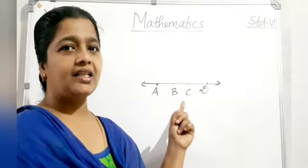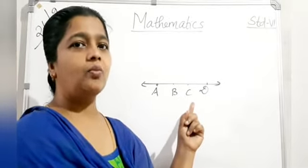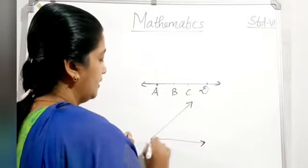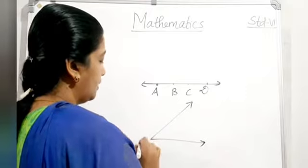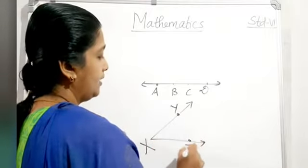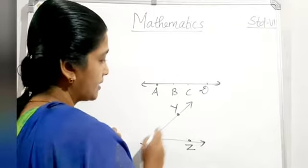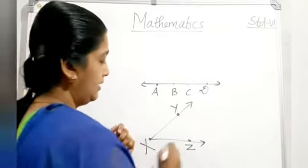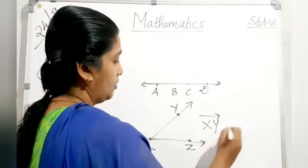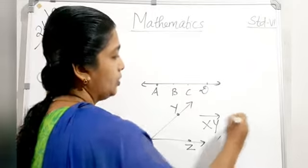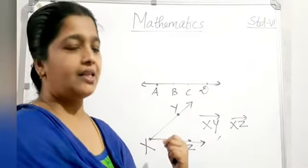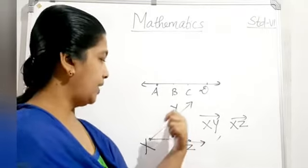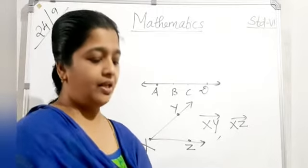A ray starts from a fixed point and goes in one direction endlessly. For example, from point X, with points Y and Z, we get two rays: XY and XZ. These are the two rays from the figure.